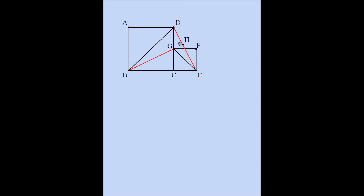Let's extend BG to meet DE at point H. We can show that triangle BCG and triangle DAG are similar by showing that these two angles are congruent because they are vertical angles, and these two angles are congruent because triangle BCG is congruent to triangle DCE. If triangle BCG and triangle DAG are similar, then angle DAG must be a right angle. That's our conclusion: triangle DAG is similar to triangle BCG.